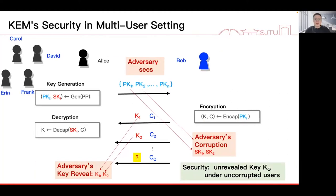In this setting, an adversary is able to see all users' public keys and all ciphertexts sent over the public channels. Moreover, a powerful adversary may even corrupt some users and obtain their secret keys, and may obtain some keys encapsulated in some ciphertexts. The security of KEM would ask the unreviewed keys under uncorrupted users to be pseudorandom.